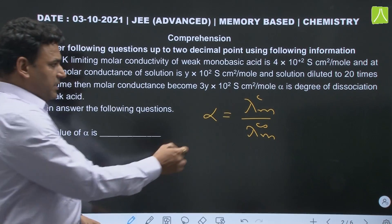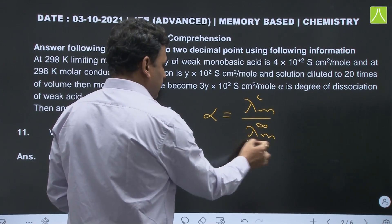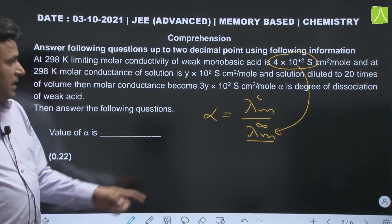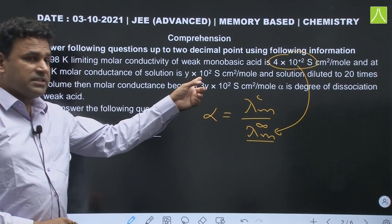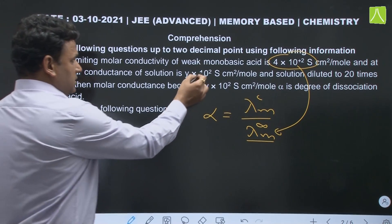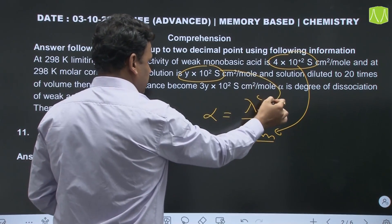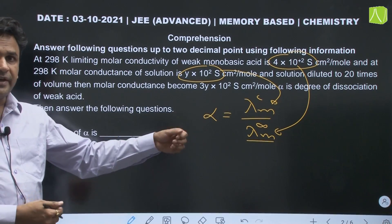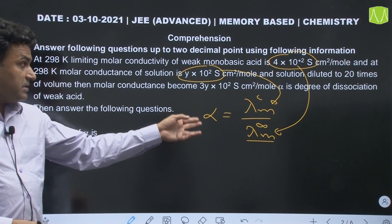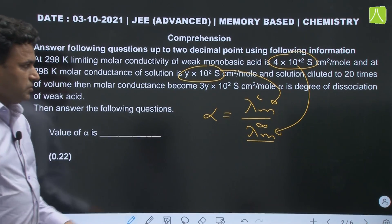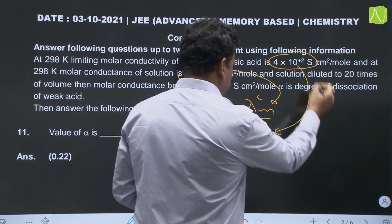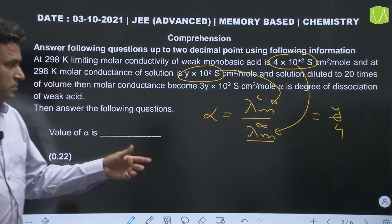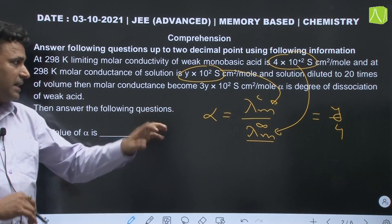In this question, λM° (lambda M at infinite dilution) is given to us as 4 × 10², and λM at a particular concentration C is also given to us as Y × 10². So by taking this ratio we can calculate the value of alpha. Definitely alpha is going to be in terms of Y. This ratio from the two data values gives us alpha = Y/4.